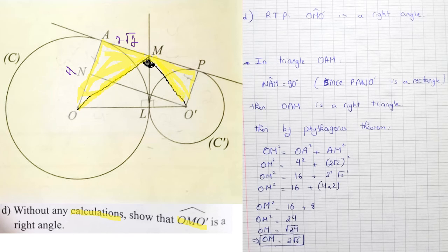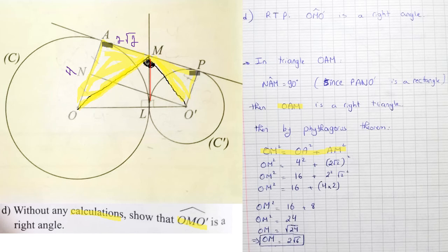First step — find OM. In right triangle OAM, the right angle is at A because AM is tangent at A giving 90 degrees. I have OA equals 4 (radius) and AM equals 2√2 (from previous part, since AM equals ML equals 2√2). Applying Pythagoras: OM squared equals OA squared plus AM squared equals 16 plus 8 equals 24. So OM equals 2√6.